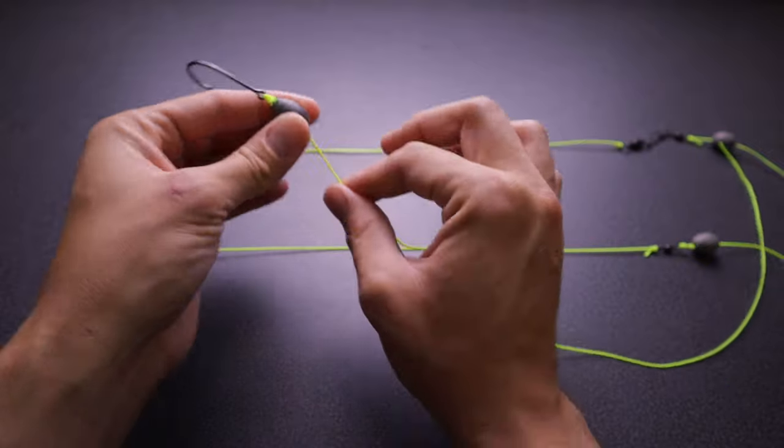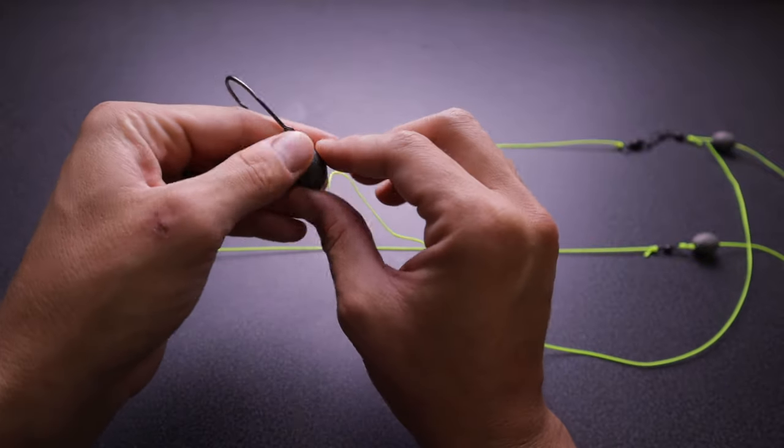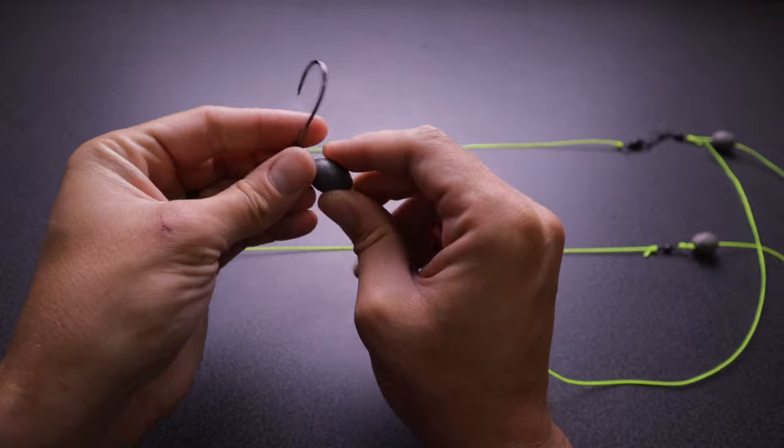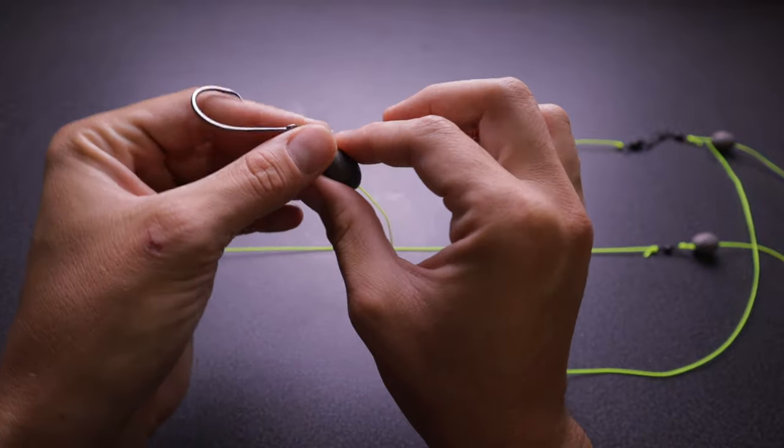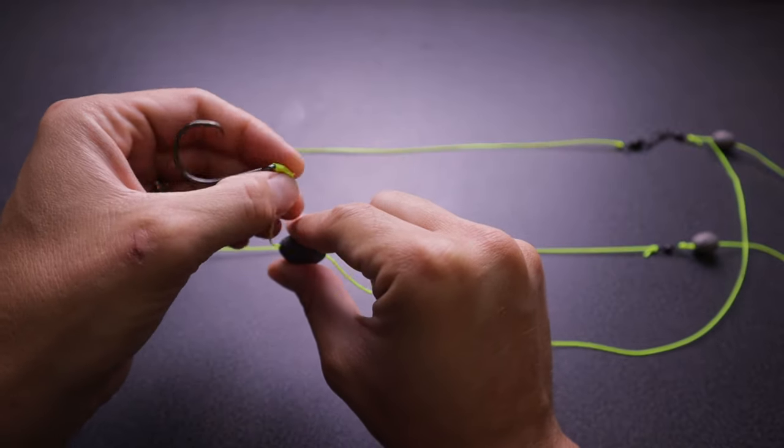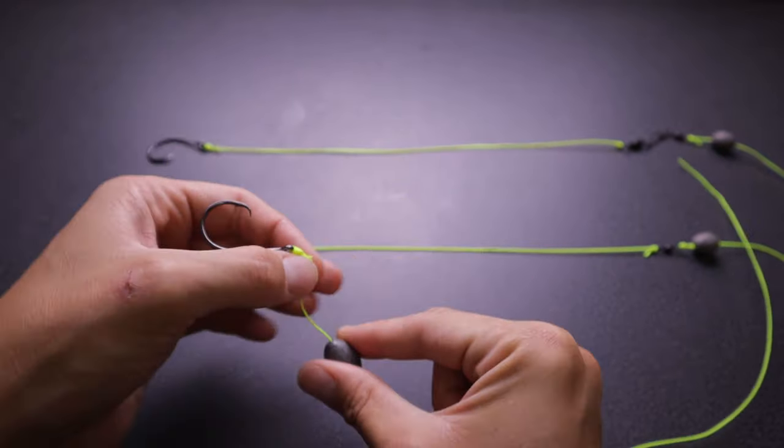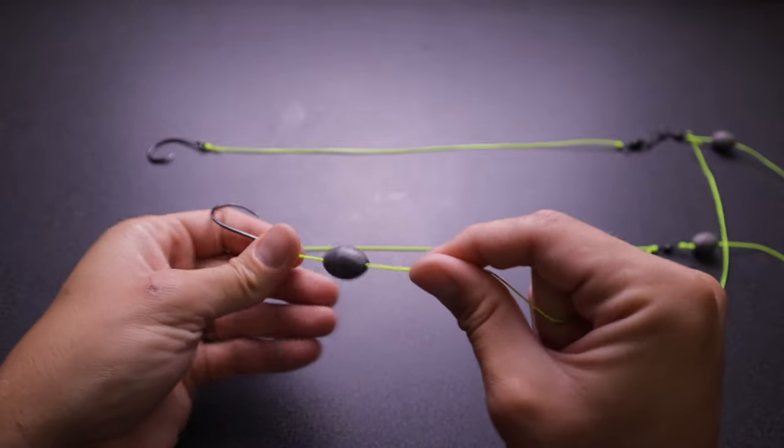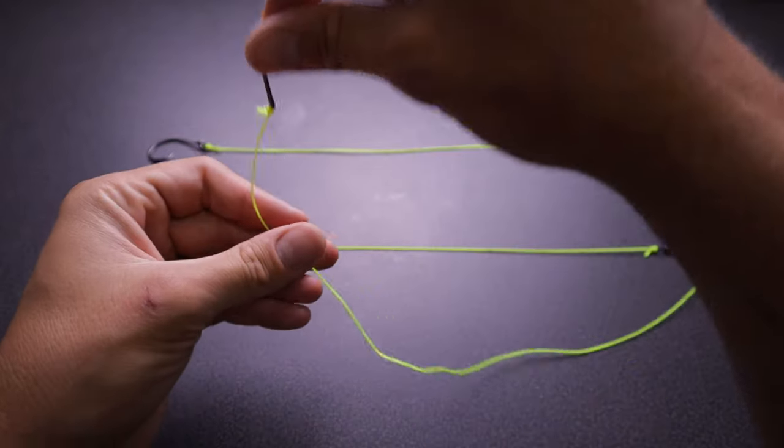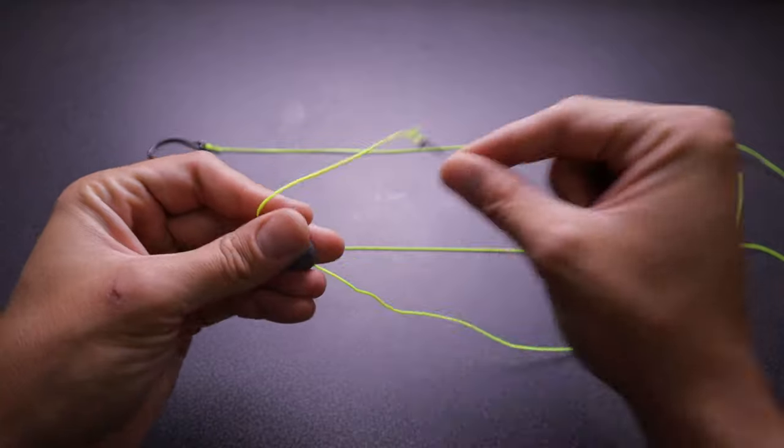One of the reasons I like it so much is when you're dropping your bait down to the bottom, because the weight is so close to the hook, it's going to pull that bait down really easily. As it sinks, you're not going to have much line coming up with the opportunity to wrap around itself.